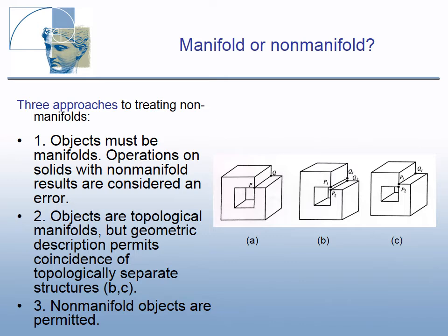In the second approach, objects are topological manifolds, but the geometric description permits coincidence of topologically separate structures — in figure B two separate edges geometrically coincide, and in figure C two faces coincide. In the third approach, non-manifold objects are permitted and the system is ready to deal with them.